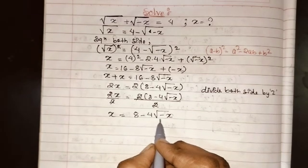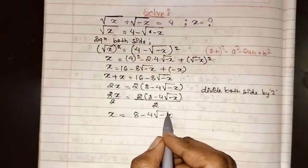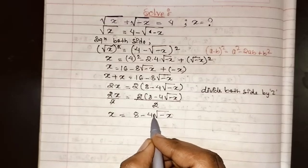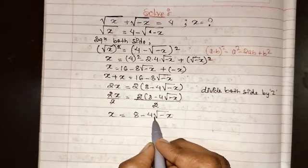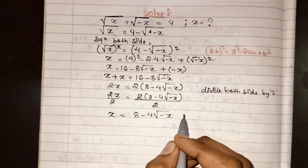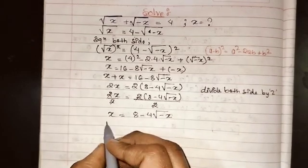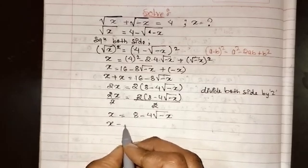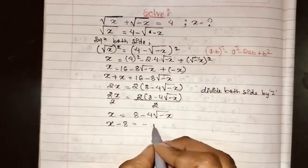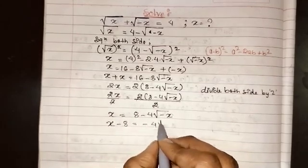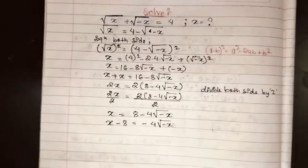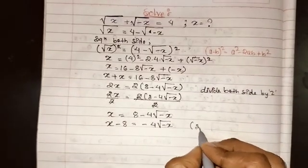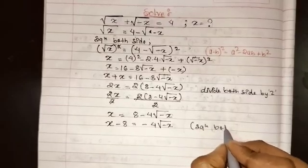Now we need to remove the remaining square root. We will bring the 8 to the left side, giving us x - 8 = -4√(-x). We have rearranged the terms. Now we will square both sides again.